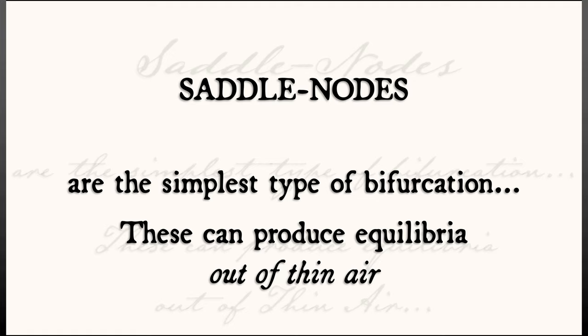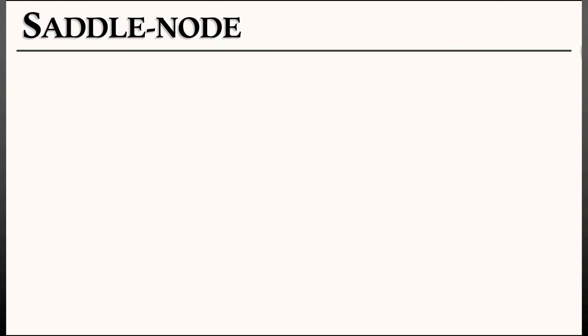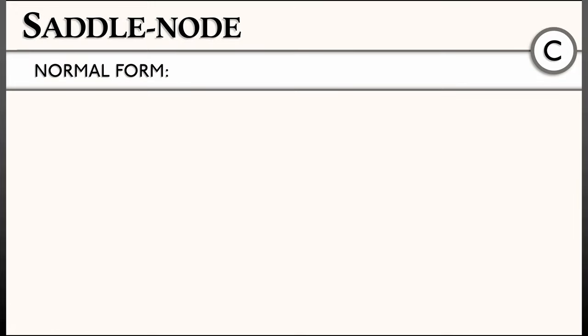Now, we're going to be looking at continuous time systems for some time now. Let's consider the saddle node. The way we're going to do this is through something called a normal form, where by normal form, I mean the simplest instantiation of this bifurcation.